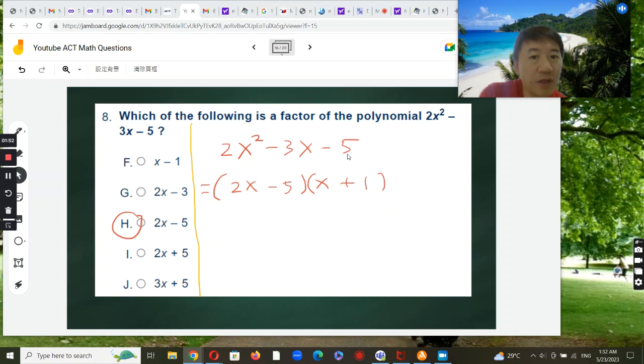And -5 times 1 is -5. So mentally checking with the FOIL method, we know we've done it correctly.